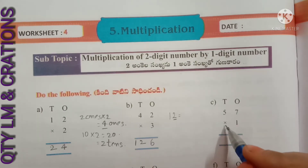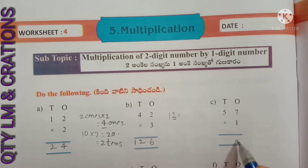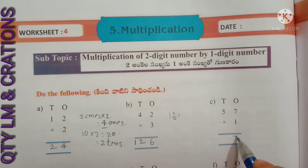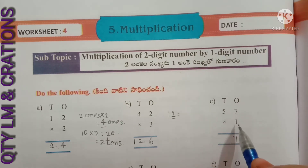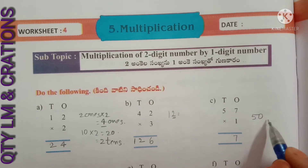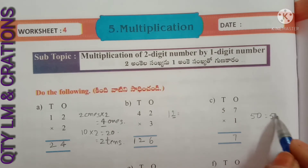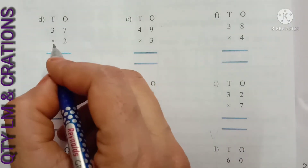C: 57 into 1. Multiply 7 with 1 — we get 7 — write 7 in the ones place. Multiply 5 tens with 1 — we get 50, that is 5 tens — write 5 in the tens place. D: 37 into 2 — we get 74.